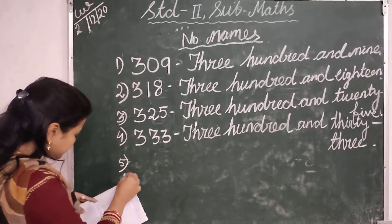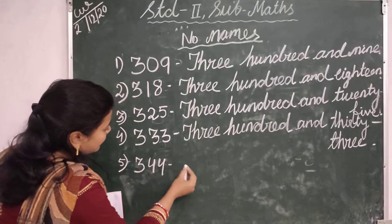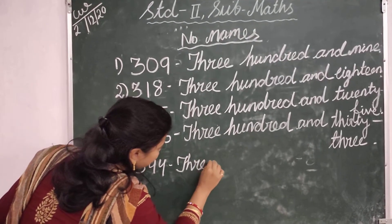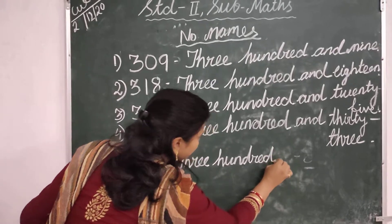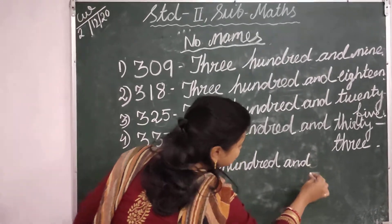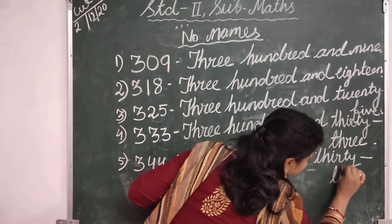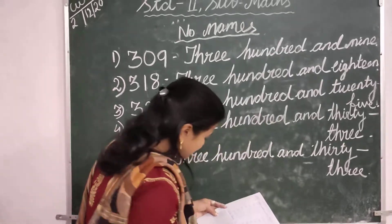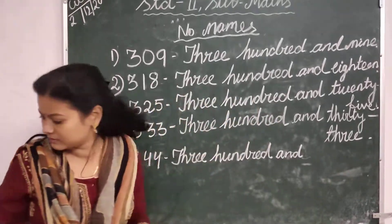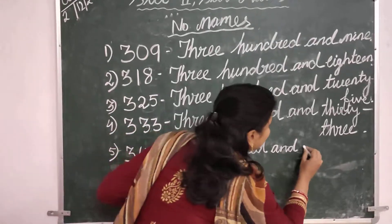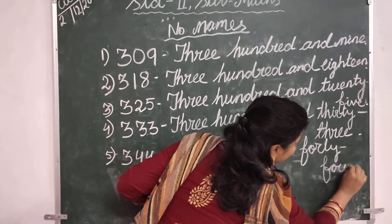Then the next number is 344. Three hundred and forty-four. T-H-R-E-E H-U-N-D-R-E-D and F-O-R-T-Y F-O-U-R. Sorry children, here 344, forty-four, F-O-R-T-Y F-O-U-R.